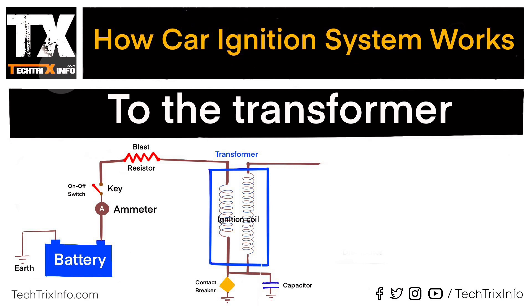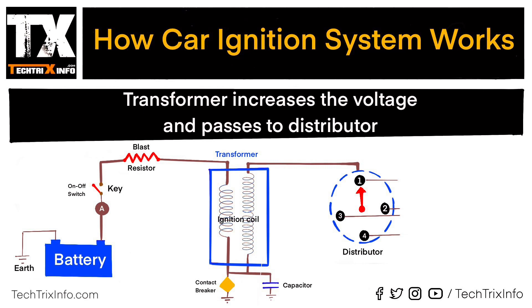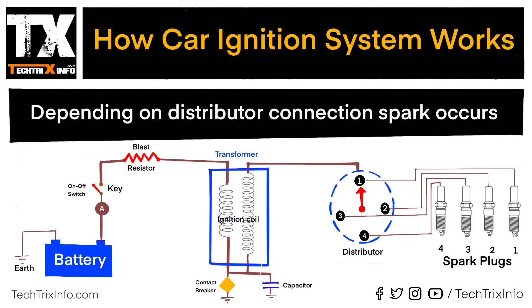The transformer is also connected to a capacitor and a contact breaker. It increases the voltage and passes it to the distributor, depending on the distributor connection.